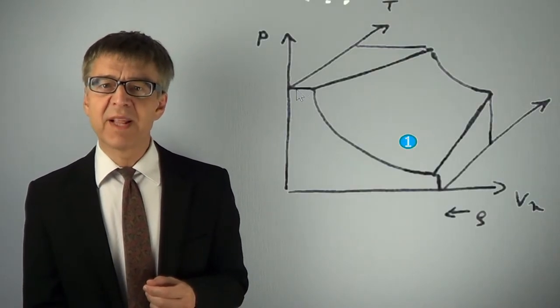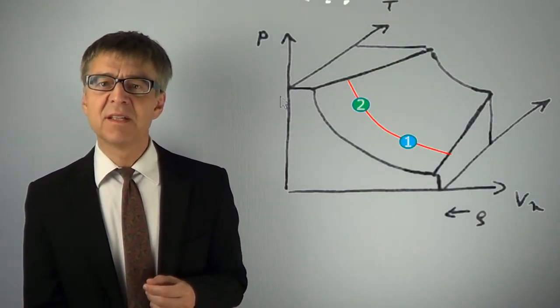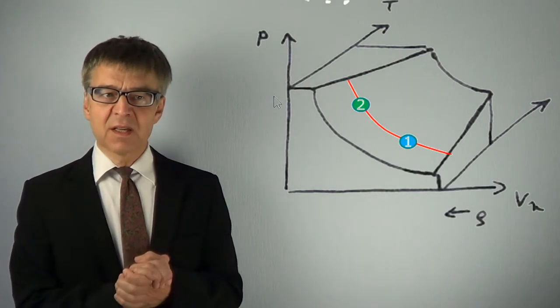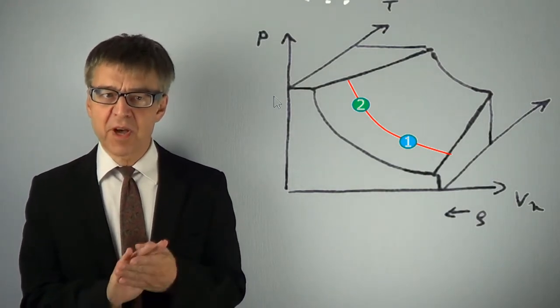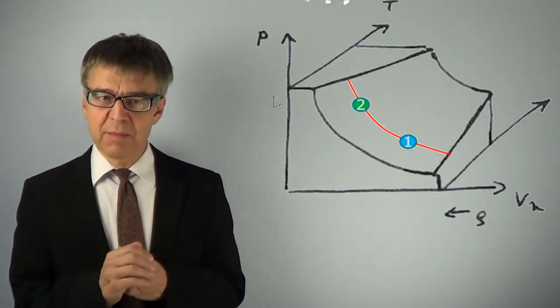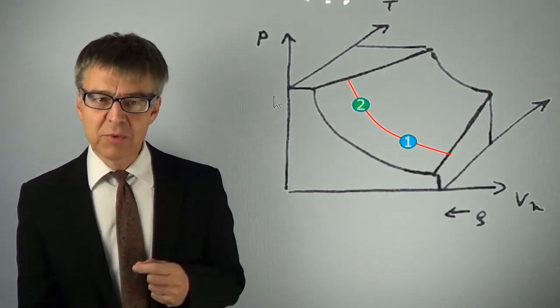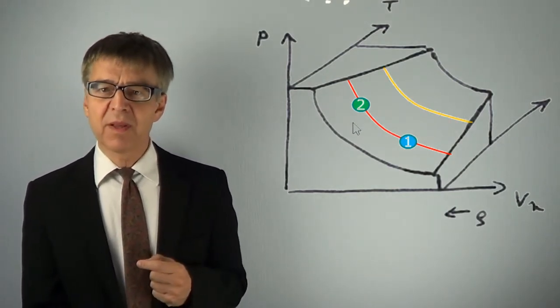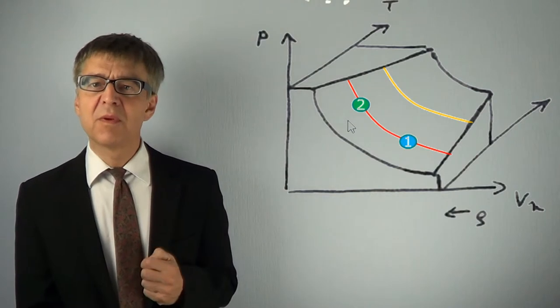The same representation in the PVT phase diagram gives the red line, a sectional view of the surface at a constant temperature. At higher temperature, the isotherm would run in this form, the yellow line.